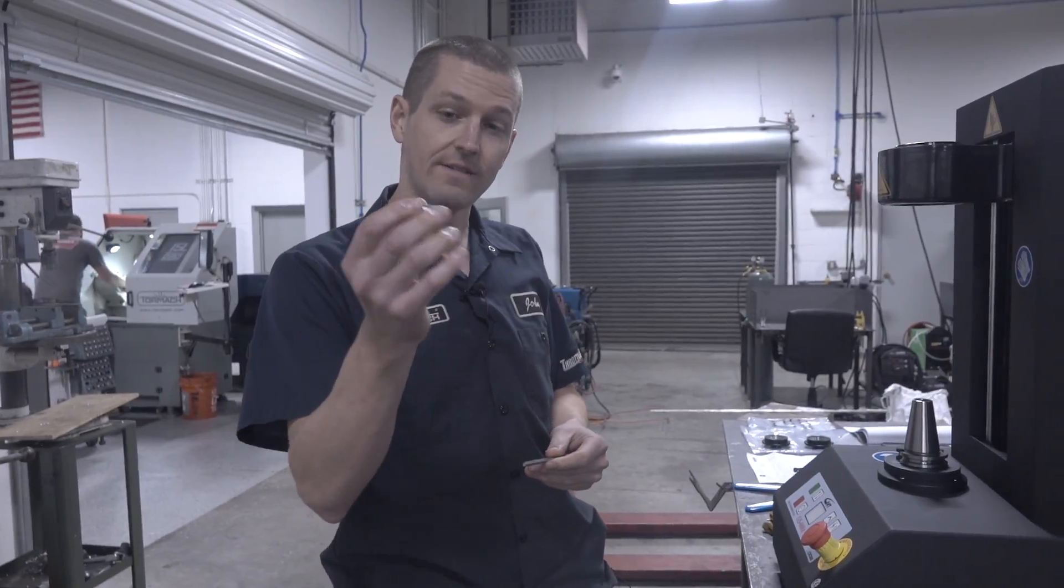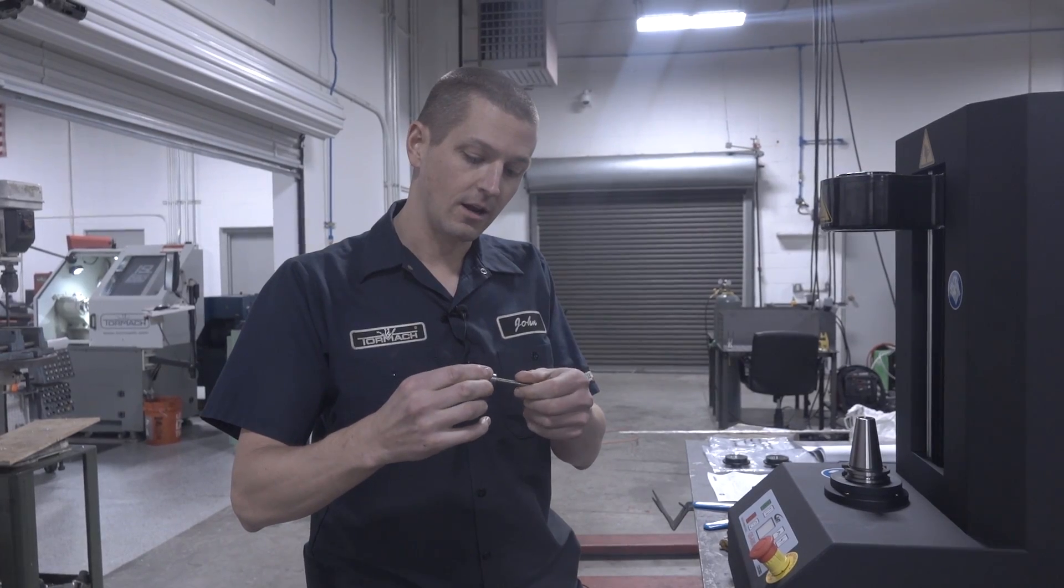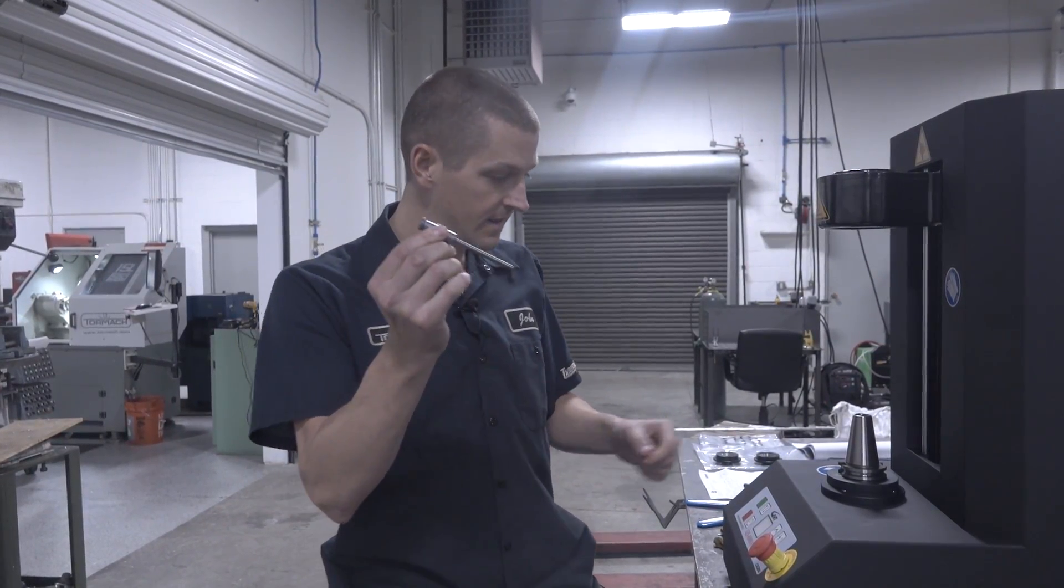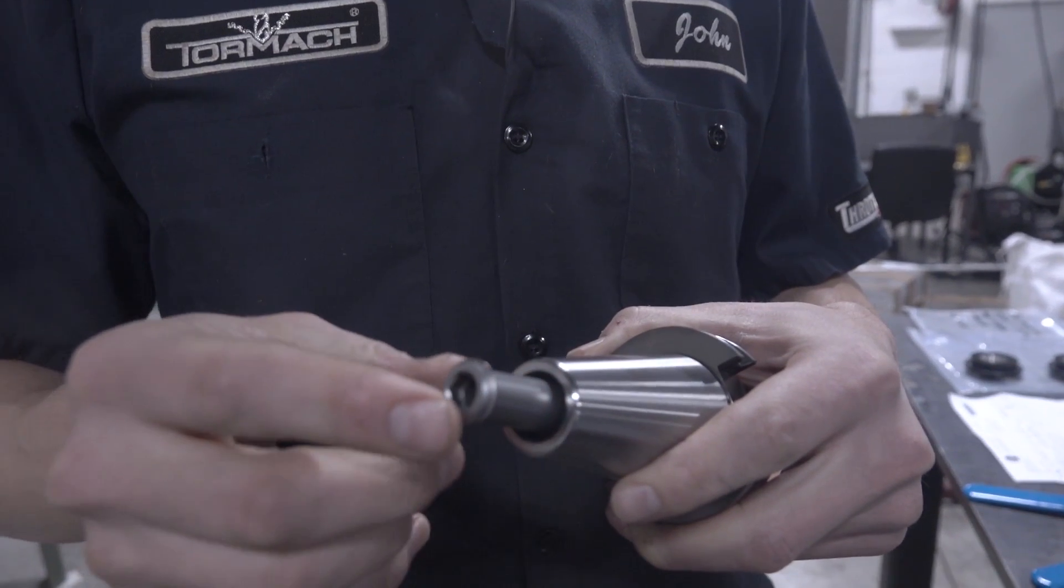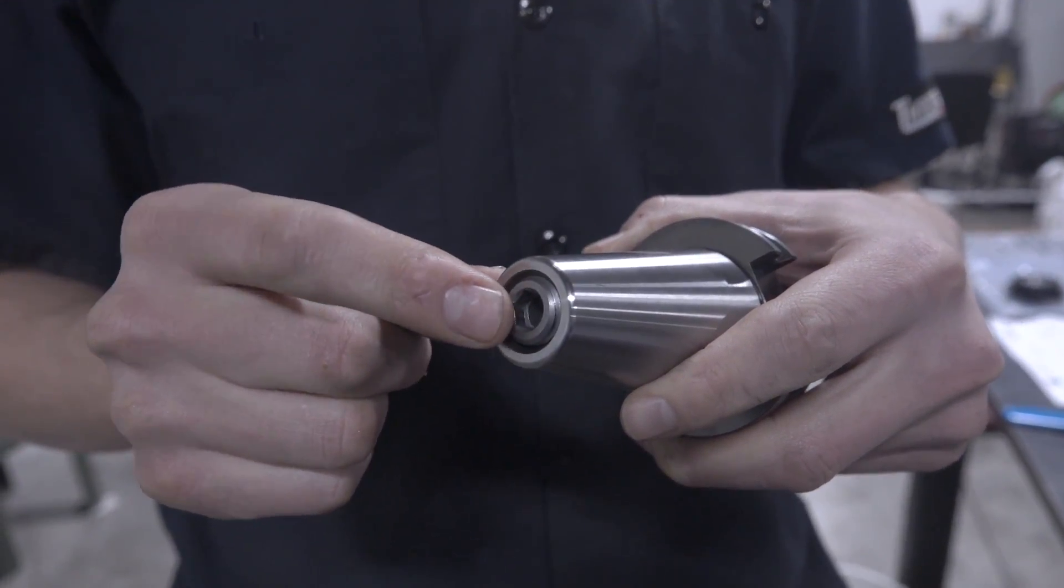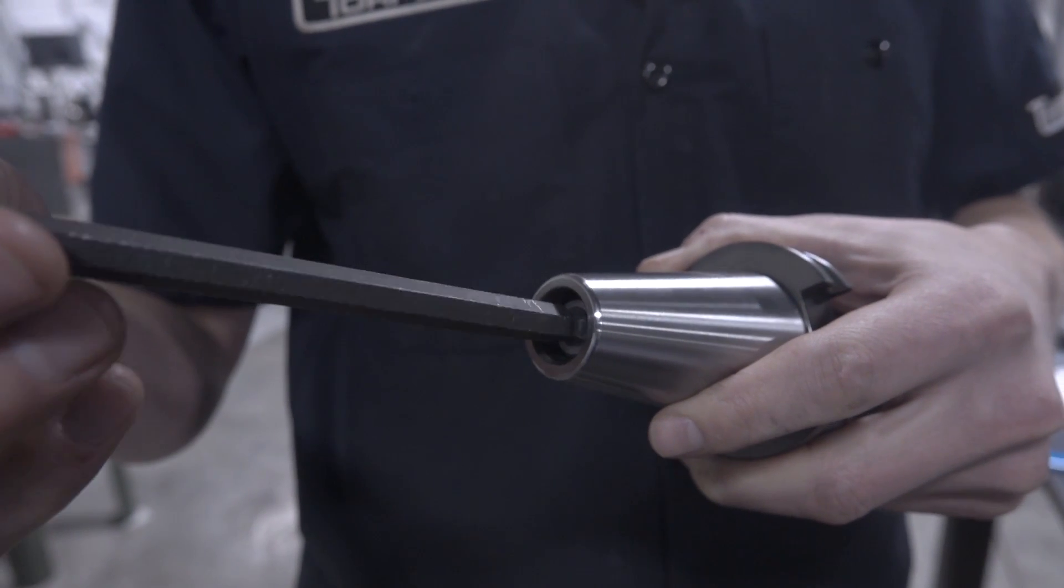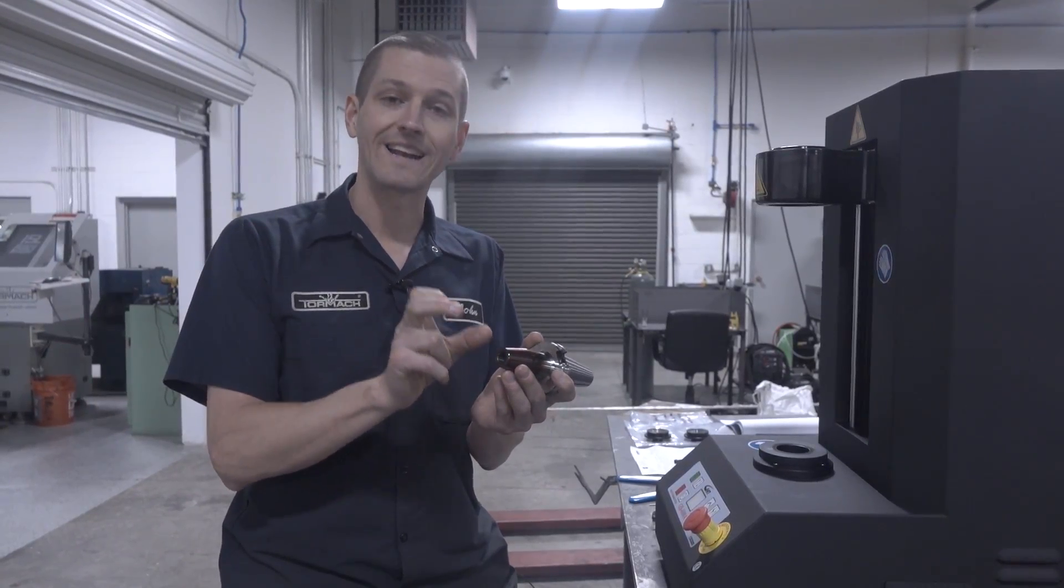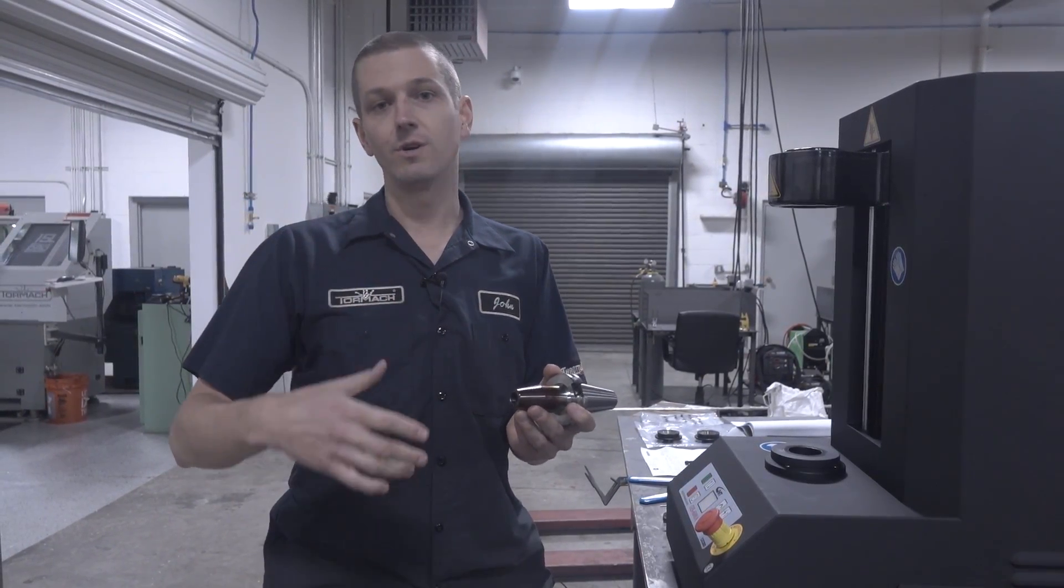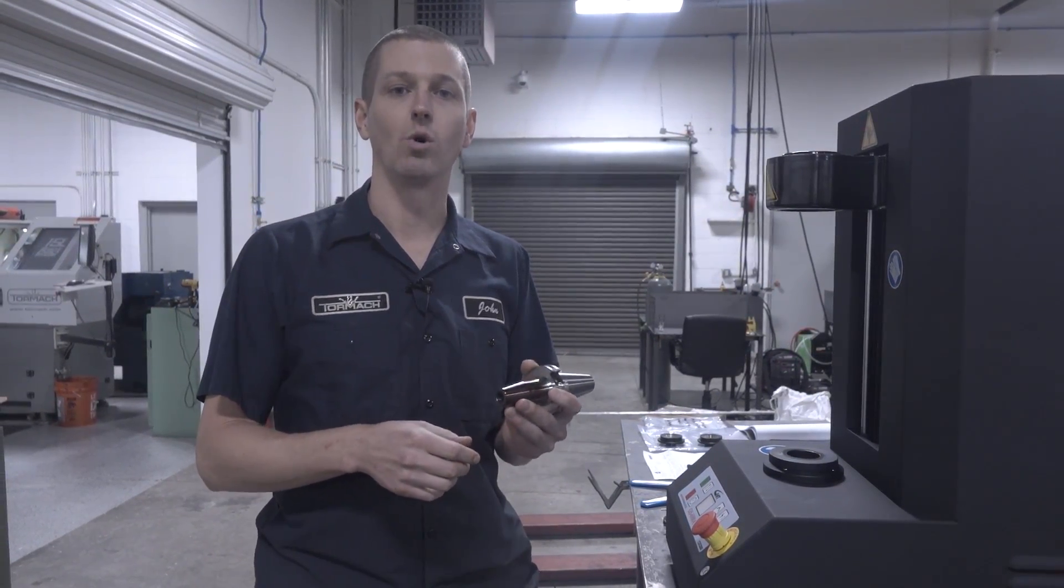So the other thing that's nice about this Maritool holder is they've got these stops. So you can thread a quarter 28 rod into here, and then this threads into the end of the tool. So by having a reference stop down there, it means when you swap your tools out, you're going to have the same amount of tool stick out, which is really nice. You should absolutely still touch it off. I would guess it's repeatable to within a few thousandths of an inch, but what's important is just making sure you've got consistent stick out for fixturing and avoiding collisions, especially when you're doing stuff like 4th and 5th axis work.